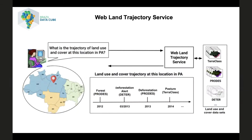Another web service we are developing in the Brazil DataCube project is the web land trajectory service. Based on a set of land use and cover data produced by different projects in Brazil, such as TerraClass, PRODES, and DETER, this service returns how a given spatial location was classified by these projects over time. In this example, you can see a spatial location that was classified as forest by the PRODES project, then as a deforestation alert by the DETER project, and finally as pasture by the TerraClass project. This service is very useful to analyze land use and cover samples in Brazil.